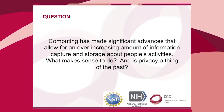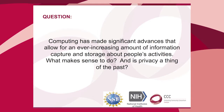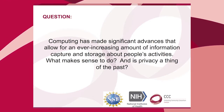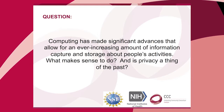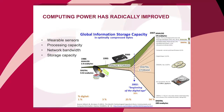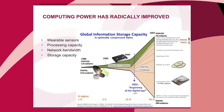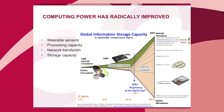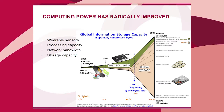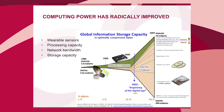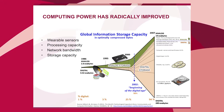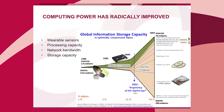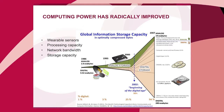Computing power has radically improved. There's progress in wearable sensors, processing capacity, network bandwidth, and storage capabilities. Digital storage capacity has changed exponentially — right now we have the ability to store virtually everything, with cloud storage available. One area people are exploring is life logging: the basic idea is total recall through total capture of virtually everything that happens in your life.